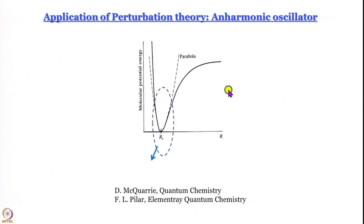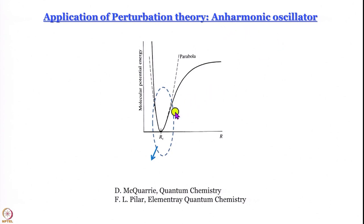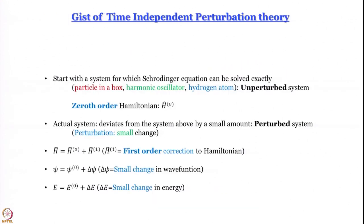That is the scope of discussing the application of perturbation theory in describing an anharmonic oscillator. An anharmonic oscillator is one whose potential is not actually parabolic — rather, for longer distances it curves downward and goes to zero asymptotically.